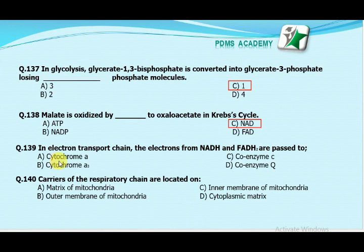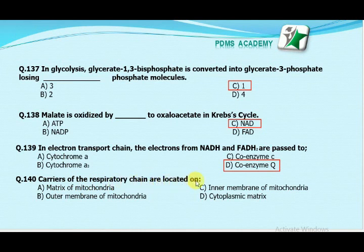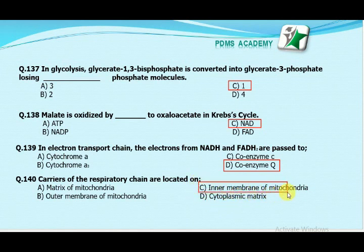Our next MCQ is: in the electron transport chain, the electrons from NADH and FADH2 are passed to — Option A: cytochrome A. Option B: cytochrome A3. Option C: coenzyme C. Option D: coenzyme Q. Our correct answer is D, coenzyme Q. Our next MCQ is: carriers of the respiratory chain are located on — Option A: matrix of mitochondria. Option B: outer membrane of mitochondria. Option C: inner membrane of mitochondria. Option D: cytoplasmic matrix. Our correct answer is C, inner membrane of mitochondria.